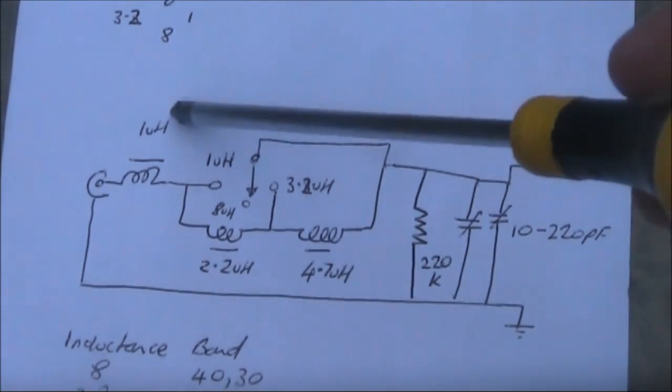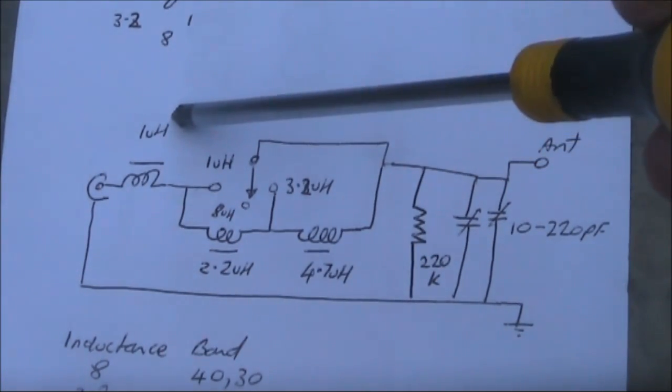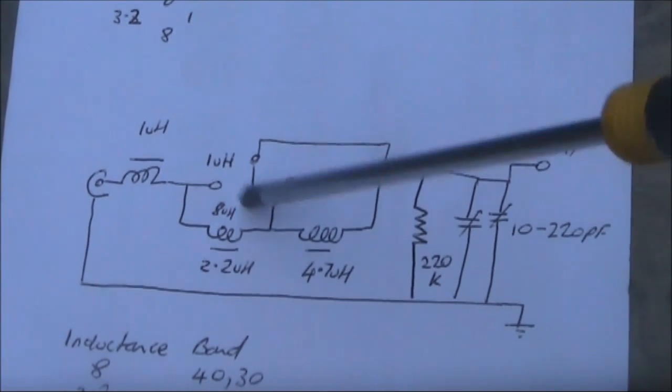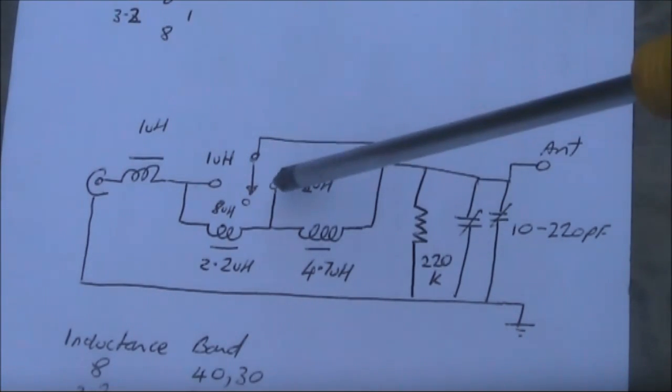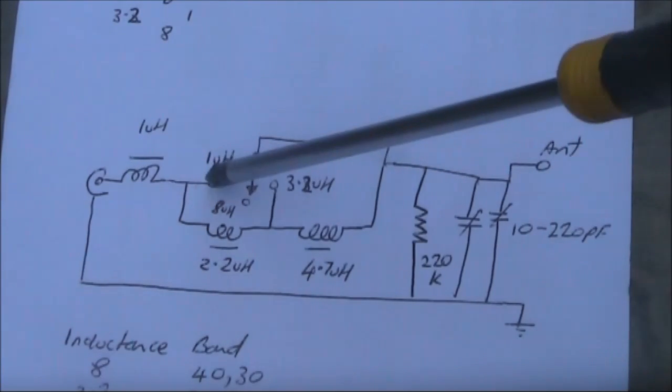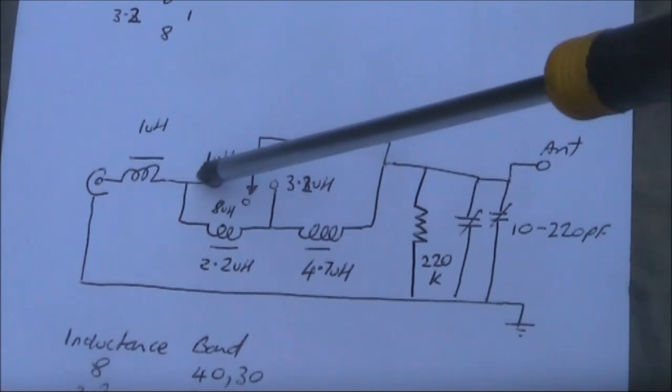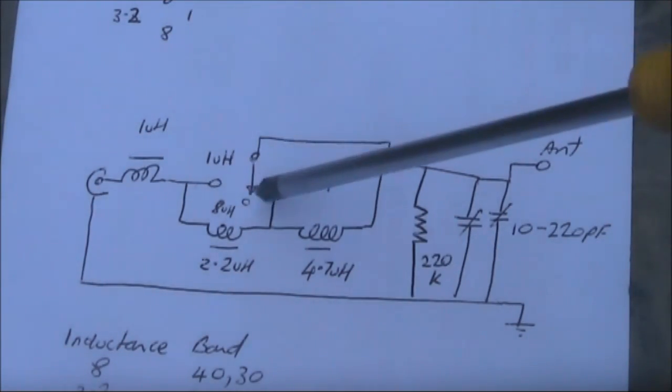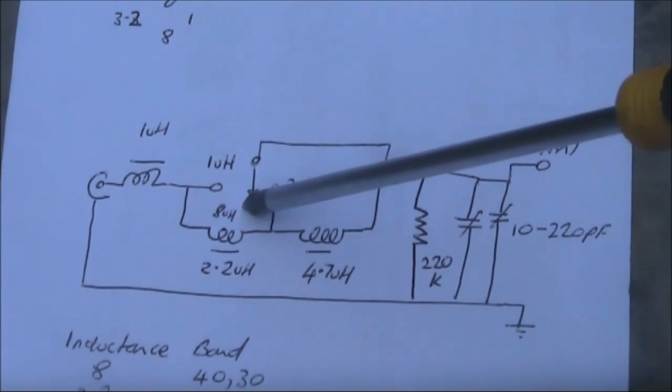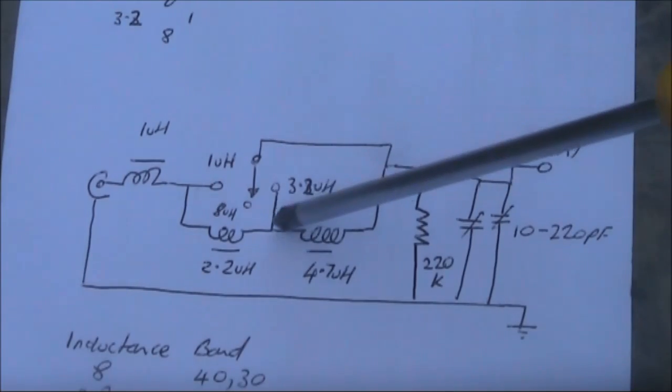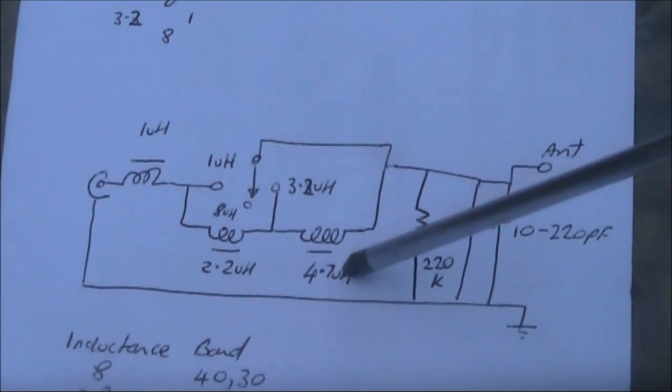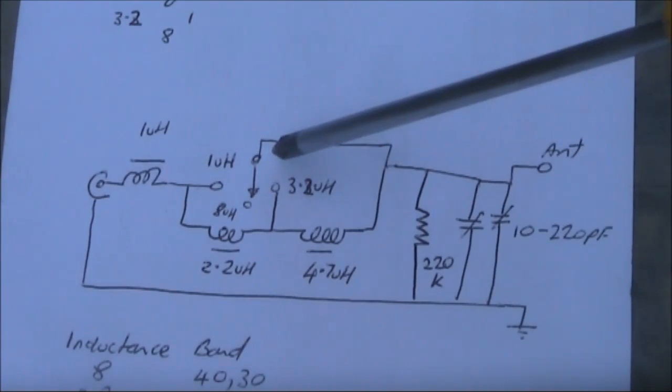Here's the transmitter connection. The 1µH is permanently in circuit, and the switch selects between neutral position where everything's in series, to one end where two of the inductors are shorted, and the other end where both are shorted. When the switch is in the middle, then no inductors are shorted, and you've got the full inductance of the three in series. 1µH plus 2.2 plus 4.7, which is close to 8µH.